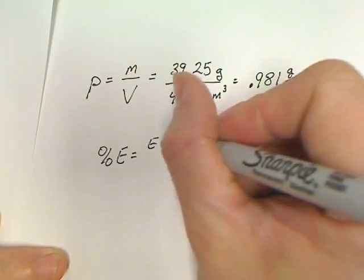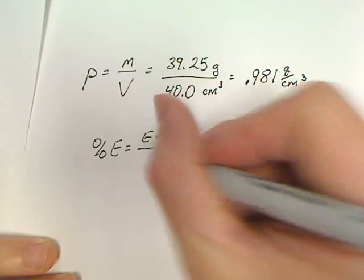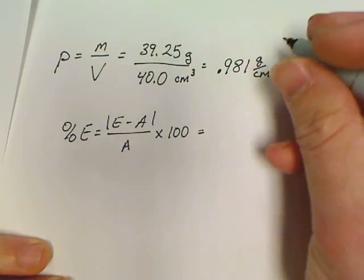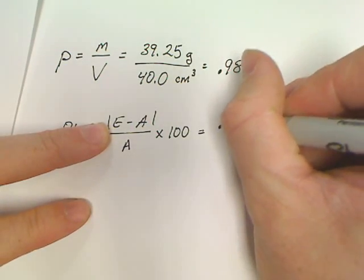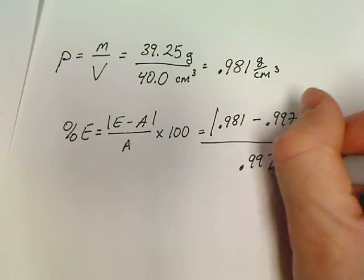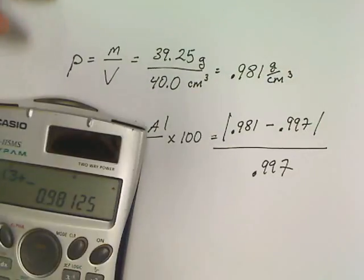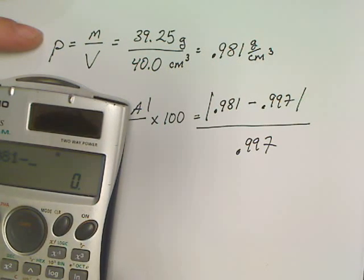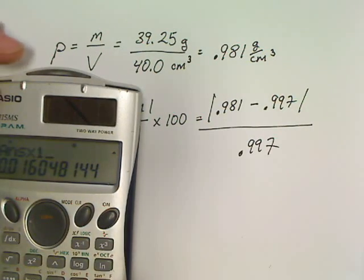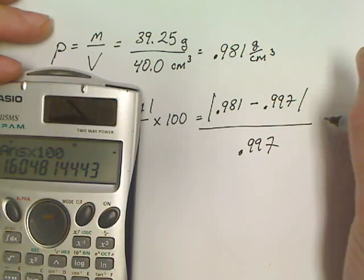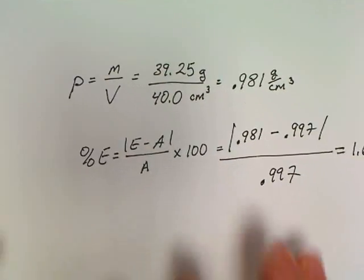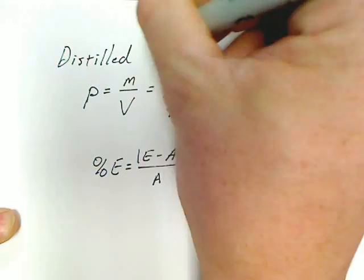Percent error equals E minus A. I may do percent error 15 times in the lab, but I'm going to at least have the equation written out one time so anybody looking over my lab knows exactly what this equation is. For me, my experimental was 0.981 minus 0.997—notice this is absolute values—over 0.997.